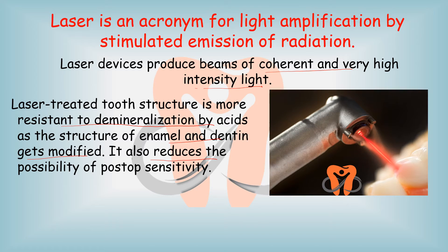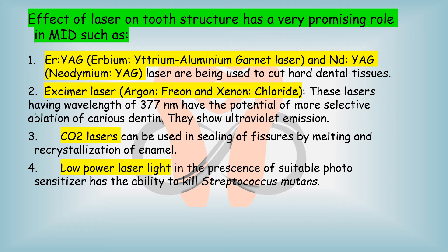Laser treatment reduces the possibility of post-operative sensitivity. Effective laser on tooth structure has a very promising role in minimally invasive dentistry, such as the Erbium Yttrium Aluminium Garnet laser and the Neodymium YAG laser, which are being used to cut hard dentinal tissues. Then the excimer lasers — which include argon fluoride and xenon chloride — have a wavelength of 377 nm and have the potential for more selective ablation of caries dentine, showing ultraviolet emission. Carbon dioxide lasers can be used for sealing of fissures by melting and recrystallization of enamel.